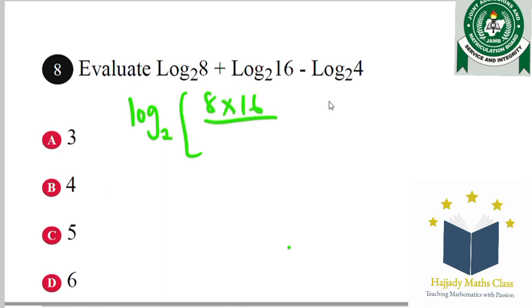And subtraction turns to division. So I have 8 divided by 4, which is 2. So I have 2 times 16, which is 32. We're writing this as the same thing as saying log₂32.